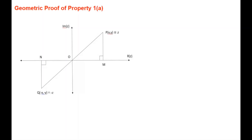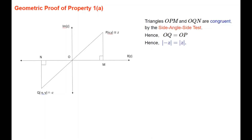Just before we leave question 1, let's look at a geometric interpretation. For property 1a, plotting in the Argand diagram: with point p representing z, we go across om (which is x) and up to p (which is y). Then minus z is plotted going across to n (minus x) and down to q (minus y). The two triangles formed are congruent by the side-angle-side test, since om equals on, mp equals nq, and the included angles are right angles. Therefore the hypotenuse op equals oq, which is what the result says.